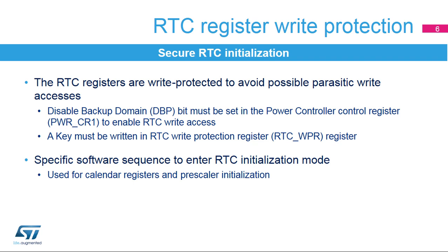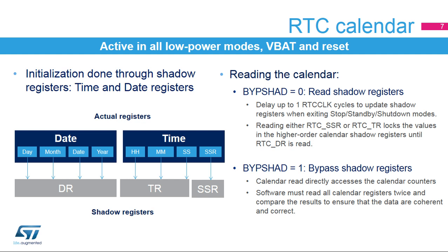Initialization mode must be entered in order to change the clock prescaler values or the calendar value. The RTC calendar keeps running in all low-power modes, in VBAT mode, and during reset. Initialization of the time and date registers is performed via their shadow registers, which are in the APB clock domain.